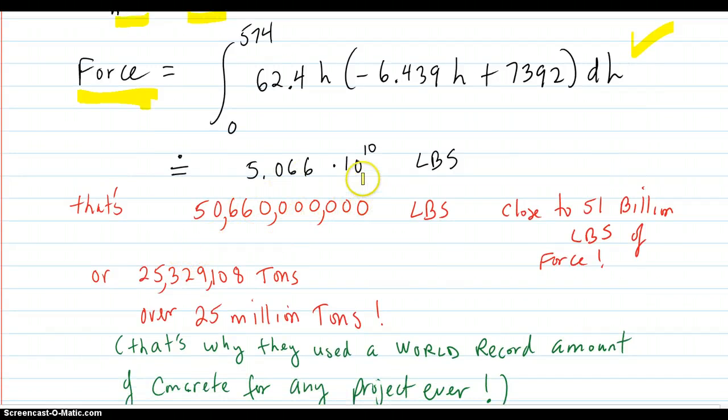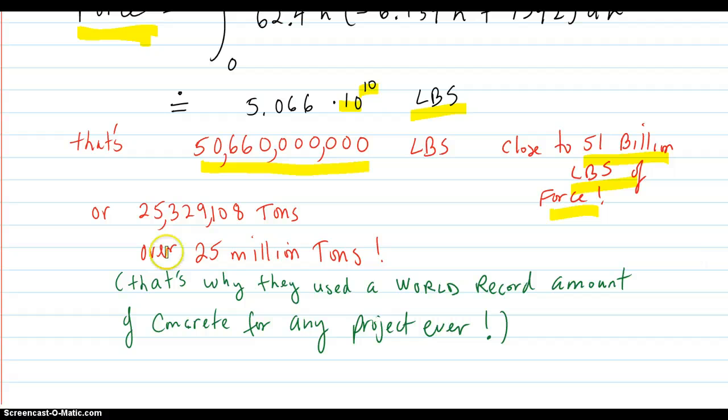So it turns out that that's 5.066 times 10 to the 10th pounds. That's over almost 51 billion pounds of force. Divide that by 2,000, it turns out it's over 25 million tons. And that's why they used a world record amount of concrete, more than any project ever.